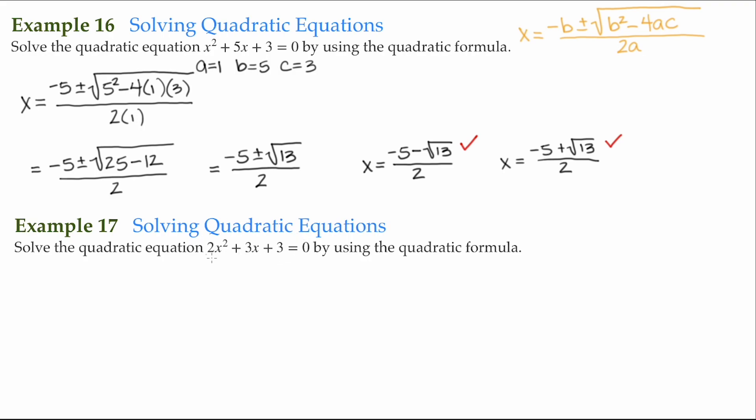So, let's try this next one here. We have 2x squared plus 3x plus 3 is equal to 0. So, here a is equal to 2, b is 3, and c is 3.